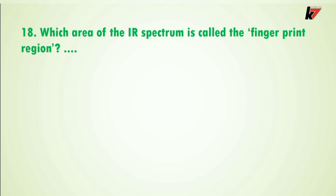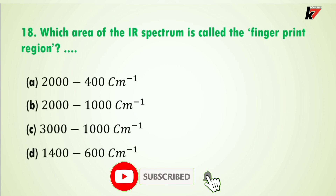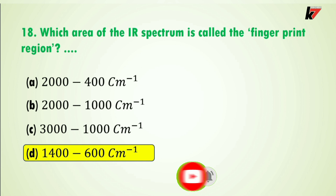Question 18: which area of the IR spectrum is called the fingerprint region? Here are four options and the correct answer is option D: 1400 to 600 cm⁻¹ of the IR spectrum is called the fingerprint region.